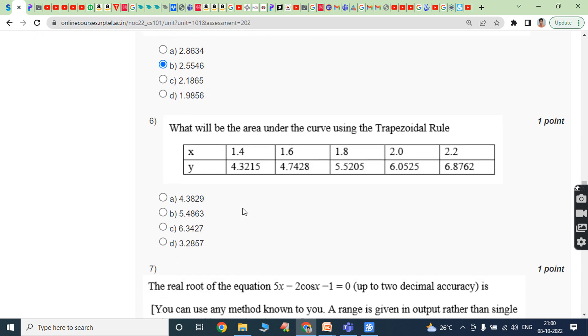Sixth question: What will be the area under the curve using the trapezoidal rule? X values are 1.4, 1.6, 1.8, 2.0, 2.2 with corresponding y values 4.3215, 4.7428, 5.5205, 6.0525, 6.8762. The answer is option A, 4.3829.